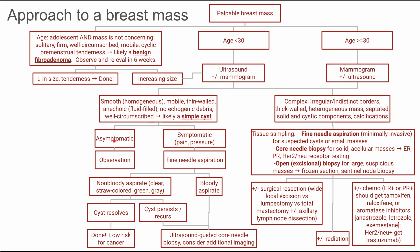If the simple cyst is asymptomatic, you don't have to do anything — you can just observe it. If the simple cyst is symptomatic, if the patient feels pain or pressure or wants something done about it, you could do a fine needle aspiration where you go in and pull out the contents of the simple cyst. If it's a non-bloody aspirate — meaning it's clear, straw-colored, green, gray, weird colors but not bloody — and the cyst resolves, then you're done.